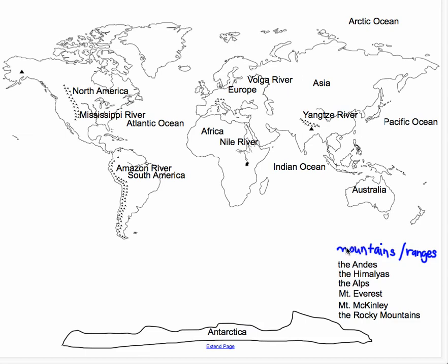Now the mountains or mountain ranges are over here. Any time that you see a map with triangles, that will represent a mountain range — a bunch of triangles. A simple mountain will be represented by one triangle, a dark triangle.